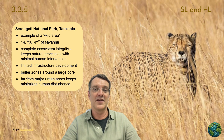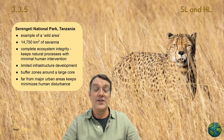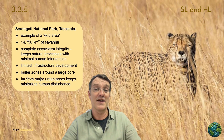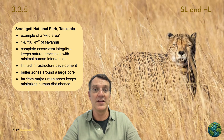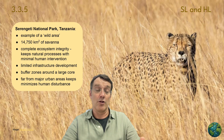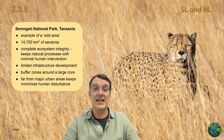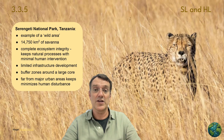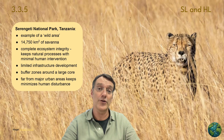Serengeti National Park in Tanzania exemplifies the wild area approach to habitat conservation. This huge protected area spans 14,750 square kilometers of savanna and maintains complete ecosystem integrity with minimal human intervention. It features limited infrastructure development, large buffer zones around a core area, and significant distance from major urban areas to minimize human disturbance, prioritizing natural processes over human accessibility.